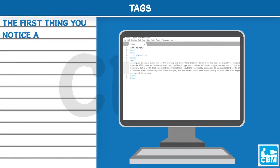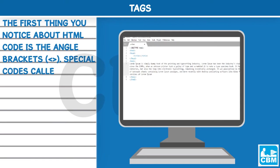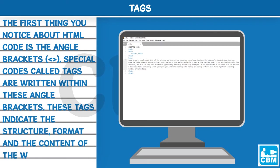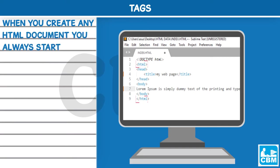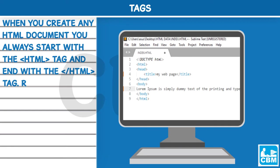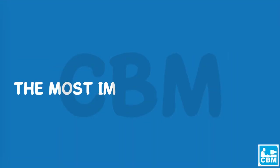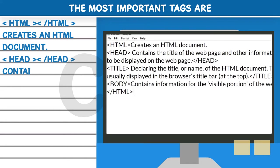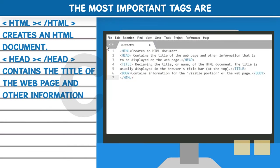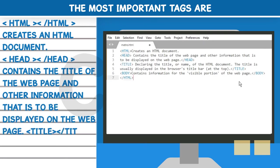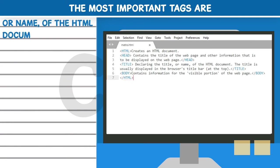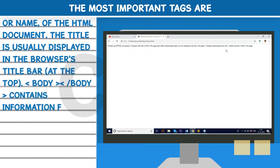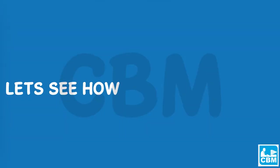Tags. The first thing you notice about HTML code is the angle brackets. Special codes called tags are written within these angle brackets. These tags indicate the structure, format and the content of the web page. When you create any HTML document you always start with the HTML tag and end with the close HTML tag. Remember to use a forward slash in the closing tag. The most important tags are: the HTML tag, which creates an HTML document; the head tag, which contains the title and other information; the title tag, which declares the title or name of the HTML document displayed in the browser's title bar; and the body tag, which contains information for the visible portion of the web page.